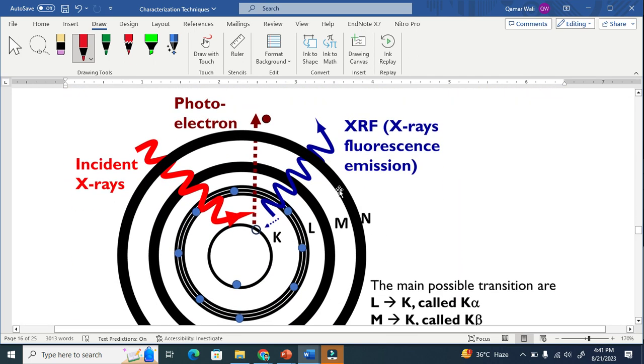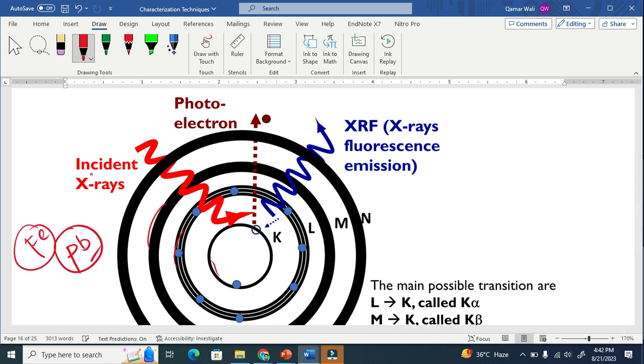This is the sample here. Let's suppose this is the sample, let's suppose it's iron, whatever the sample is. So we just shine the incident X-ray here. When we shine the incident X-ray, it just knocks out the electron and takes it to the excited state.